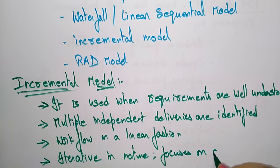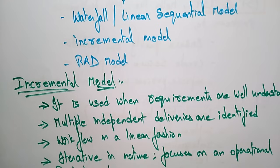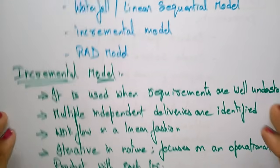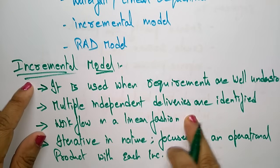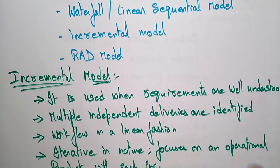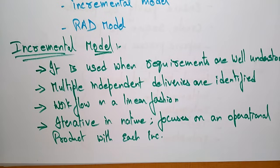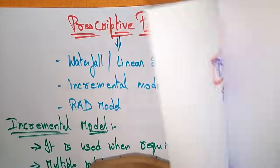To summarize: the incremental model is used when requirements are well understood, multiple independent deliveries are identified, and it delivers multiple independent modules. The prescriptive process always follows a sequential, linear flow. Even though it is iterative in nature, it follows a linear fashion one step after another, and it focuses on an operational product with each increment.